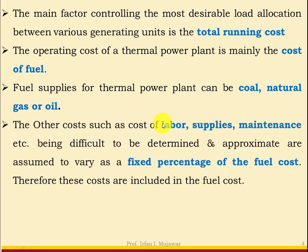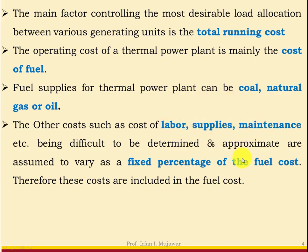Other costs such as labour, supplies, maintenance, etc., being difficult to determine accurately, are assumed to vary as a fixed percentage of the fuel cost and are therefore included in the fuel cost. In actual cost it depends on many things — the dominant parameter is fuel cost, but there are other costs like labour, supplies, and maintenance. Since determining these exactly is very difficult, we assume all these costs are some percentage of fuel cost and include them in the fuel cost itself.